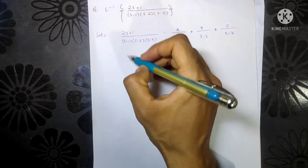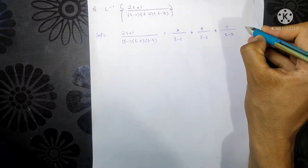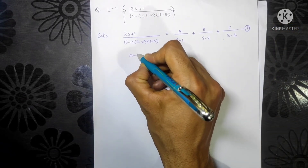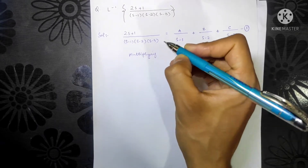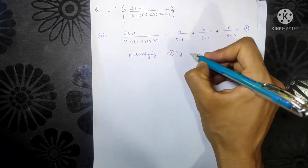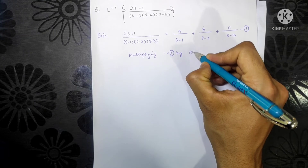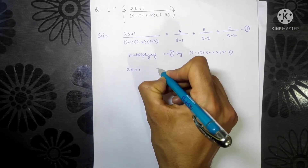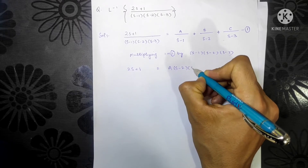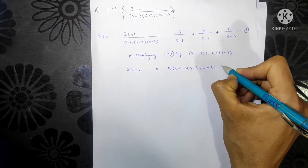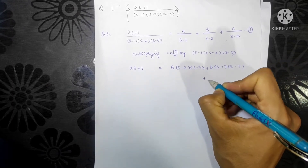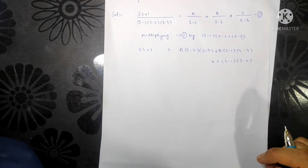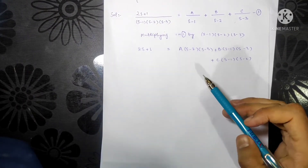Let me name this the partial fraction setup as Equation 1. Now, multiplying Equation 1 by the denominator (s minus 1)(s minus 2)(s minus 3), this gives us: 2s + 1 equals A(s minus 2)(s minus 3) plus B(s minus 1)(s minus 3) plus C(s minus 1)(s minus 2). We have now eliminated the denominator.